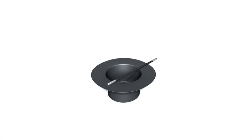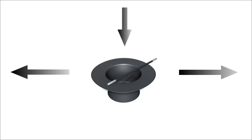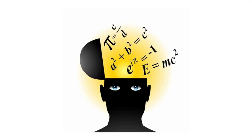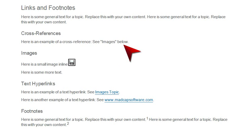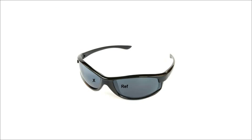But the real magic of our cross-reference format happens if the topic we're linking to in print output ends up on the page before, or the page after, or the same page where the link occurs. The cross-reference is smart enough to know where the other topic is, and exactly what words it should put in the link. So, depending on where that other page ends up in the output, our link might look like this, like this, like this, like this, or like this. And that is why cross-references are so cool.